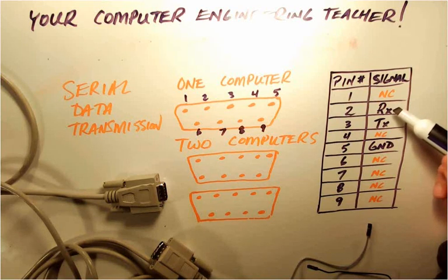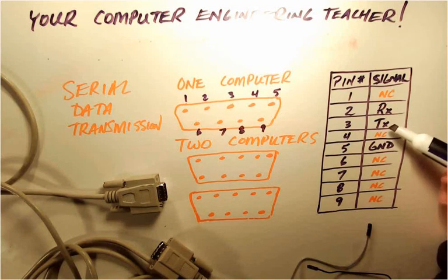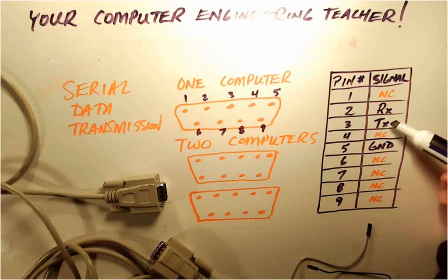And in data communications, we use RX to represent something that is receiving. Pin 3 is going to be used to transmit and TX is used to represent transmit.